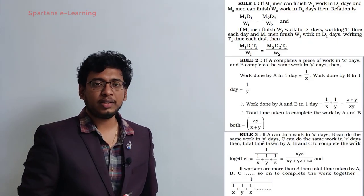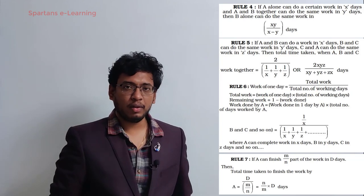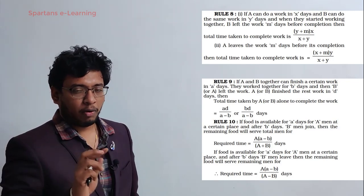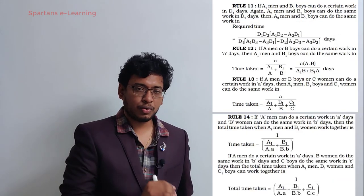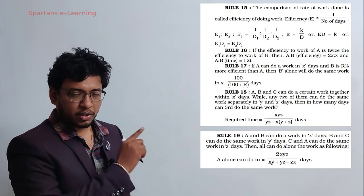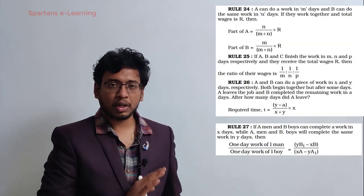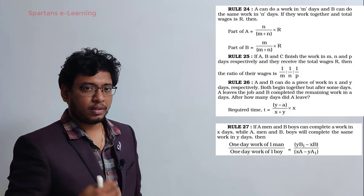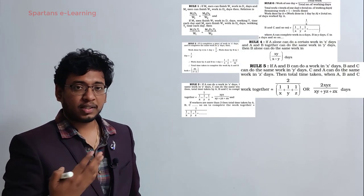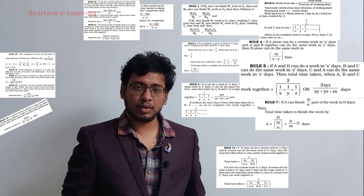On the board you can see there are 27 formulas just for time and work. I won't be using even a single formula — we'll solve each and every question conceptually and without using any formula. Our basic method will be the LCM method. The purpose of showing these formulas is simple: I just want to make you understand the importance of learning concepts. Don't mug up these formulas; it is a complete waste of time. Just think — memorizing 27 formulas for one chapter is completely worthless. It makes your learning very difficult and you feel demotivated to learn maths.